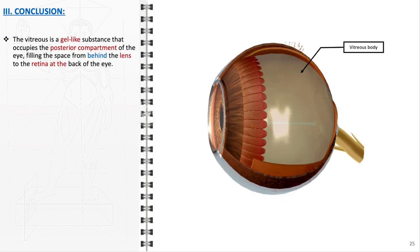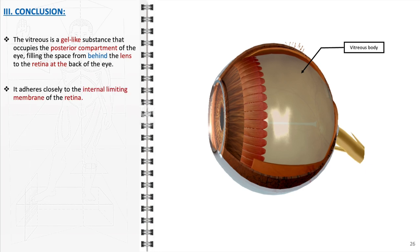In conclusion, the vitreous is a gel-like substance occupying the posterior compartment of the eye. It fills the space from behind the lens to the retina at the back of the eye and is closely adherent to the internal limiting membrane of the retina, a critical association for maintaining the eye's structural integrity. The vitreous body consists predominantly of water, supplemented by collagen, hyaluronic acid, and other proteins that give it the gel-like consistency.